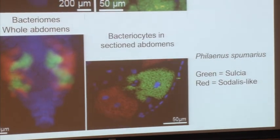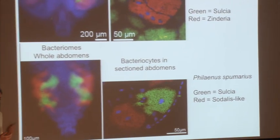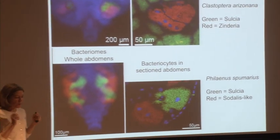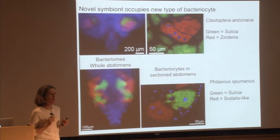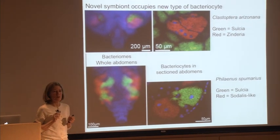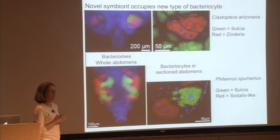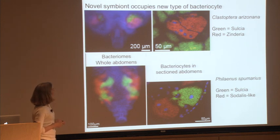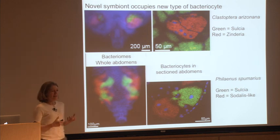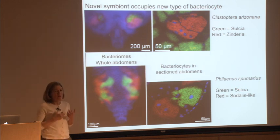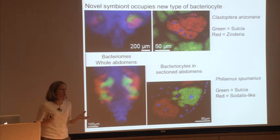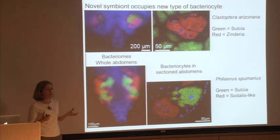Ryoichi Koga is most famous for being the best person at doing in situ hybridization on insect tissues and insect symbionts, probably in the world. He came and did a whole bunch of these. One thing he figured out is that in gaining this new symbiont, it basically invaded a new bacteriocyte — a new type of bacteriocyte was essentially evolved that was housing this new symbiont.